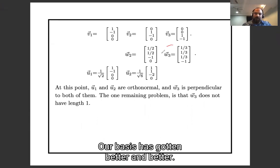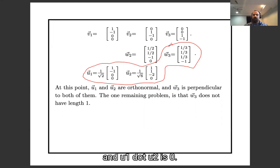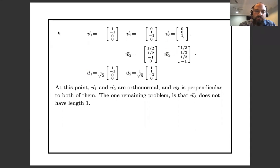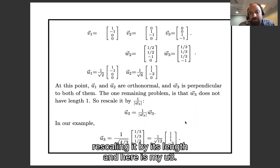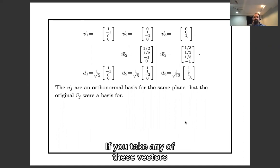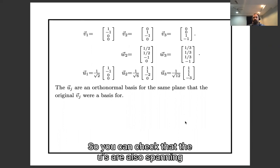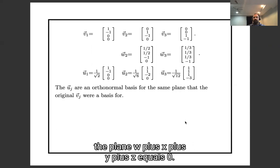And so there is my w3. Our basis has gotten better and better. Now u1, u2, w3 forms a basis where u1 is length 1, u2 is length 1, and u1 dot u2 is 0. And u1 and u2 both dot to 0 with w3. The only thing I don't have is that w3 is not length 1. That's easy to fix, I'll just rescale it by its length, and here is my u3. So the key point is the u's are an orthonormal basis. If you take any of these vectors and dot it with itself, you'll get 1. If you take any two of these vectors and dot them with each other, you'll get 0. So the u's are an orthonormal basis for the same plane that the v's were a basis for. So you can check that the u's are also spanning the plane, w plus x plus y plus z equals 0.